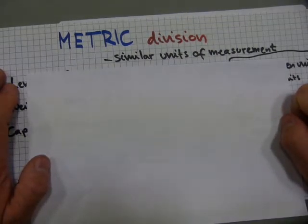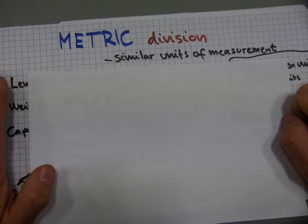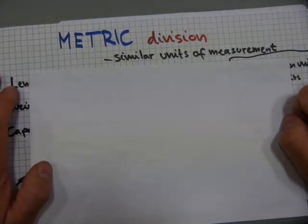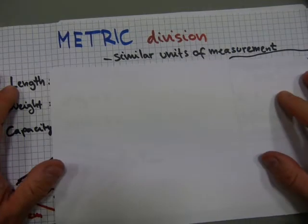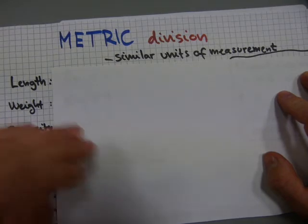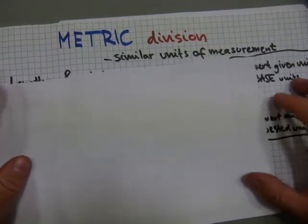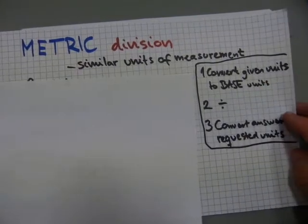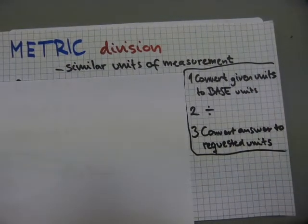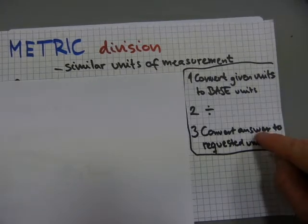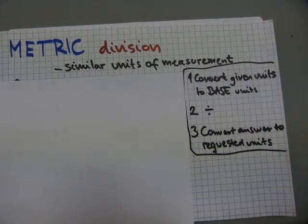In this video I will show you a way to deal with dividing amounts with metric units of measurements that are similar across the calculation. It could be length, or it could be weight, or it could be capacity for all amounts involved. And it's going to be dealt with this three-step method. Step 1: Convert the given units to base units. Step 2: Do the division. Step 3: Convert the answer from that division to requested units.